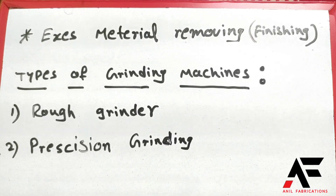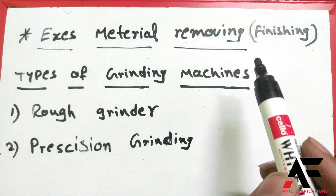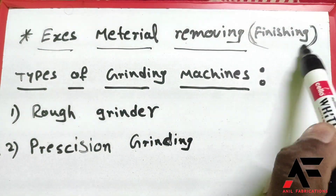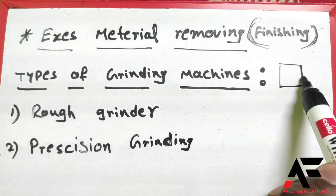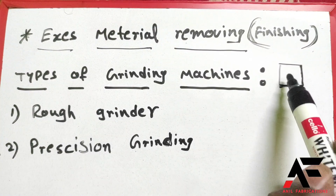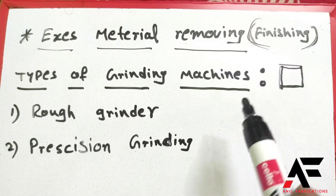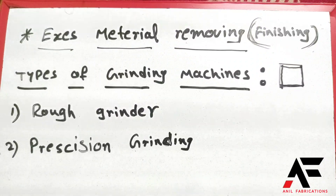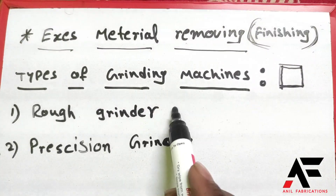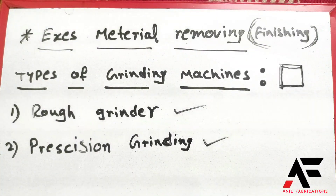A grinding machine is used to remove excess material and finish workpieces. The grinding machine has two main types: rough grinders and precision grinding.